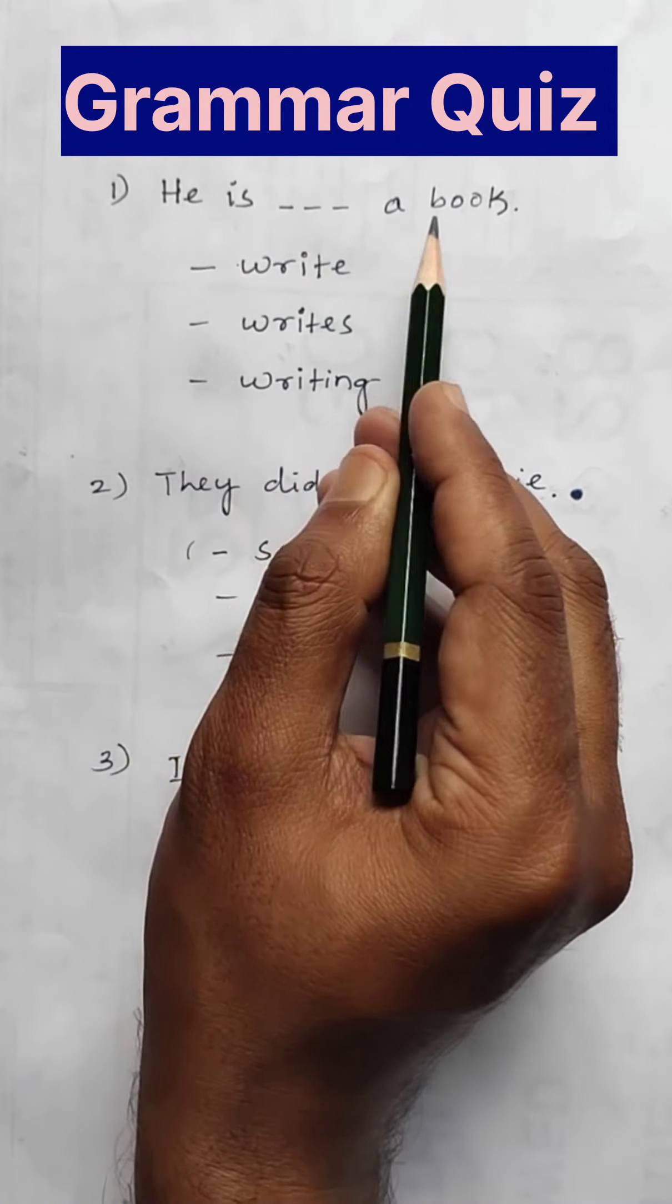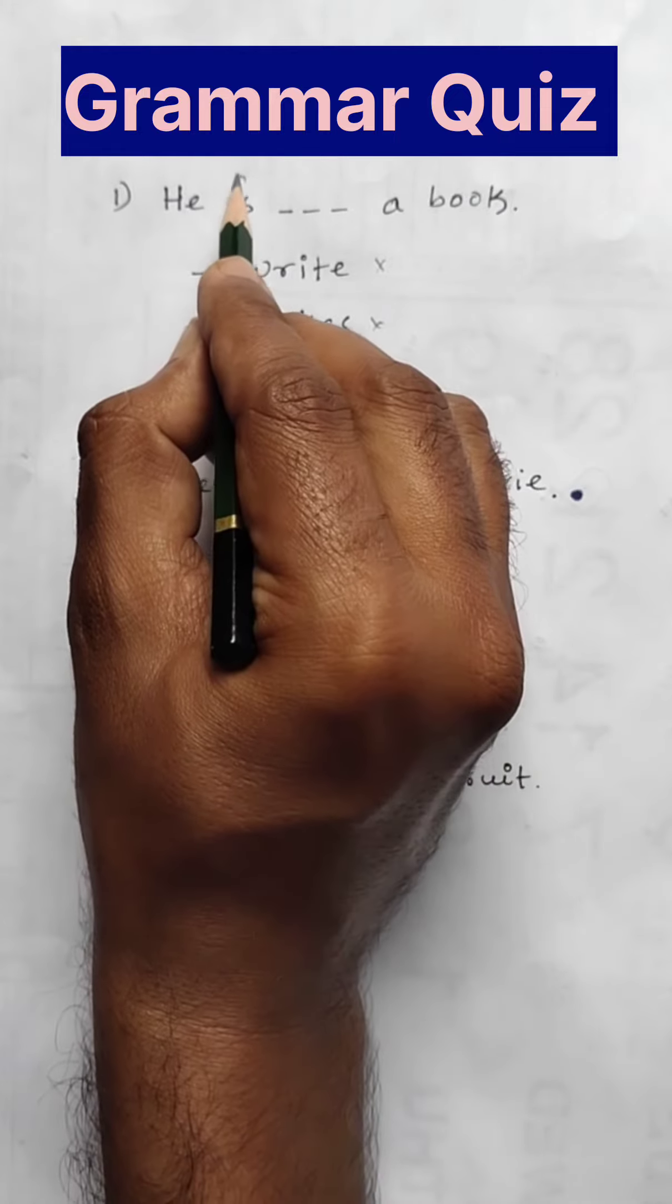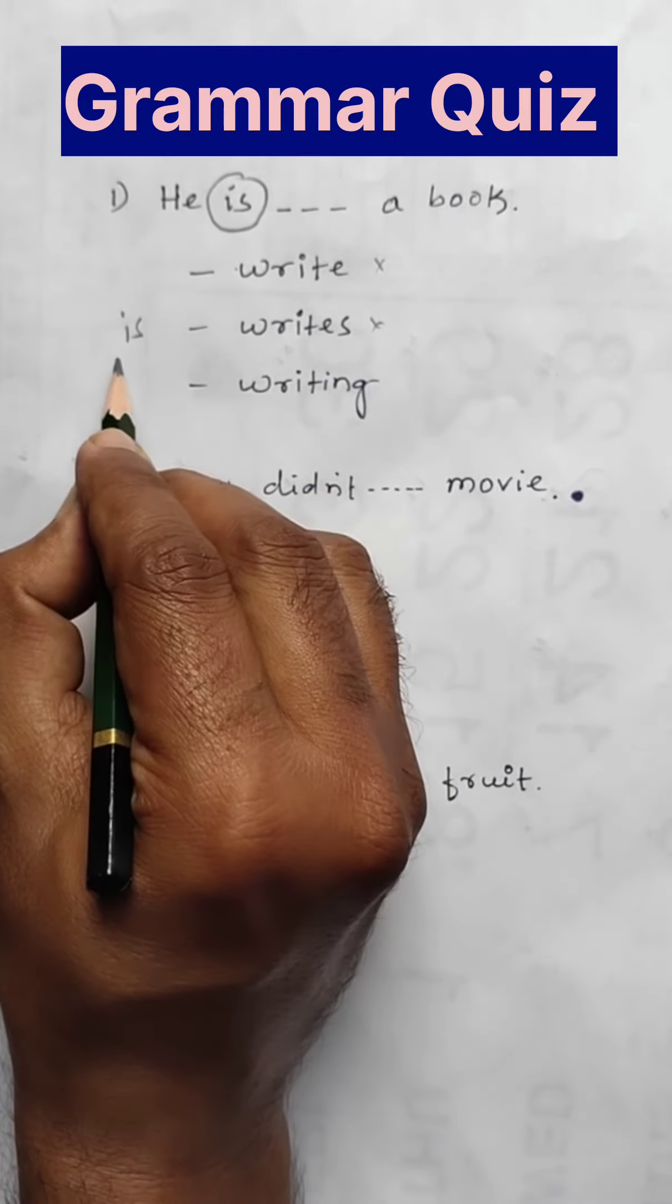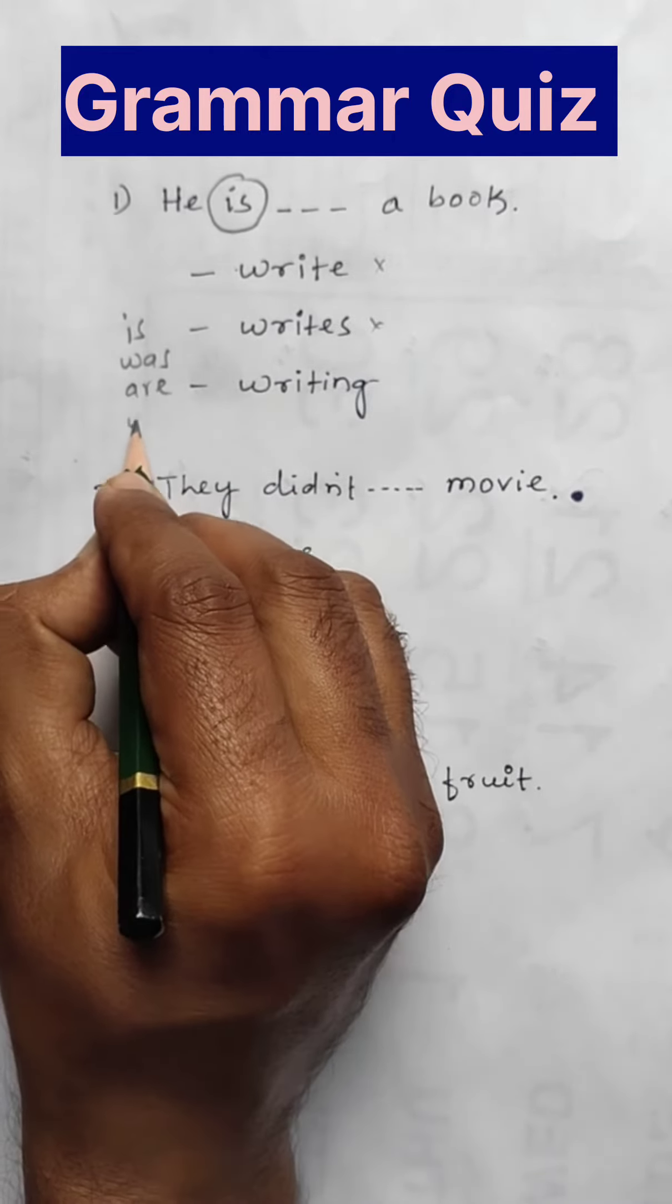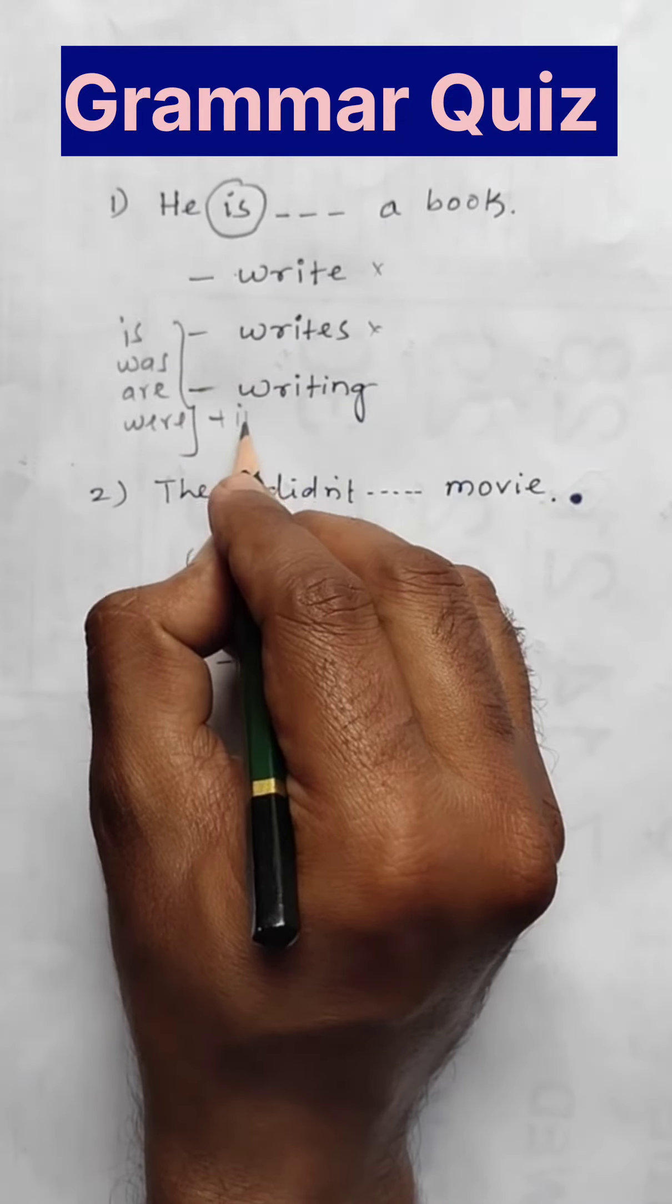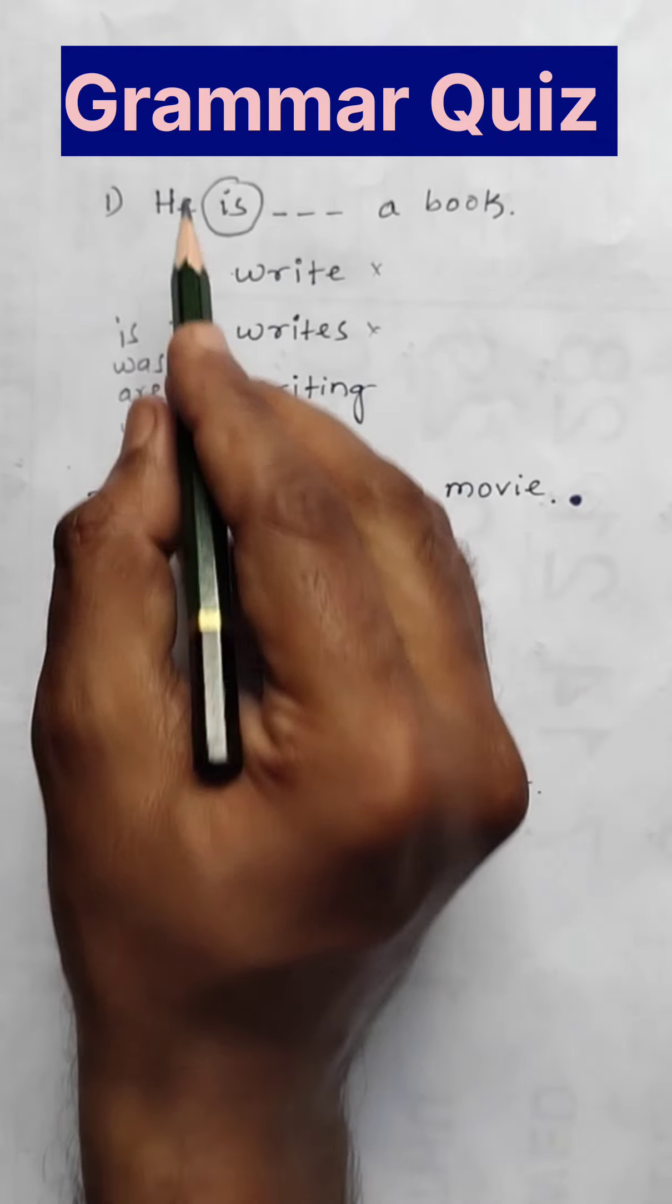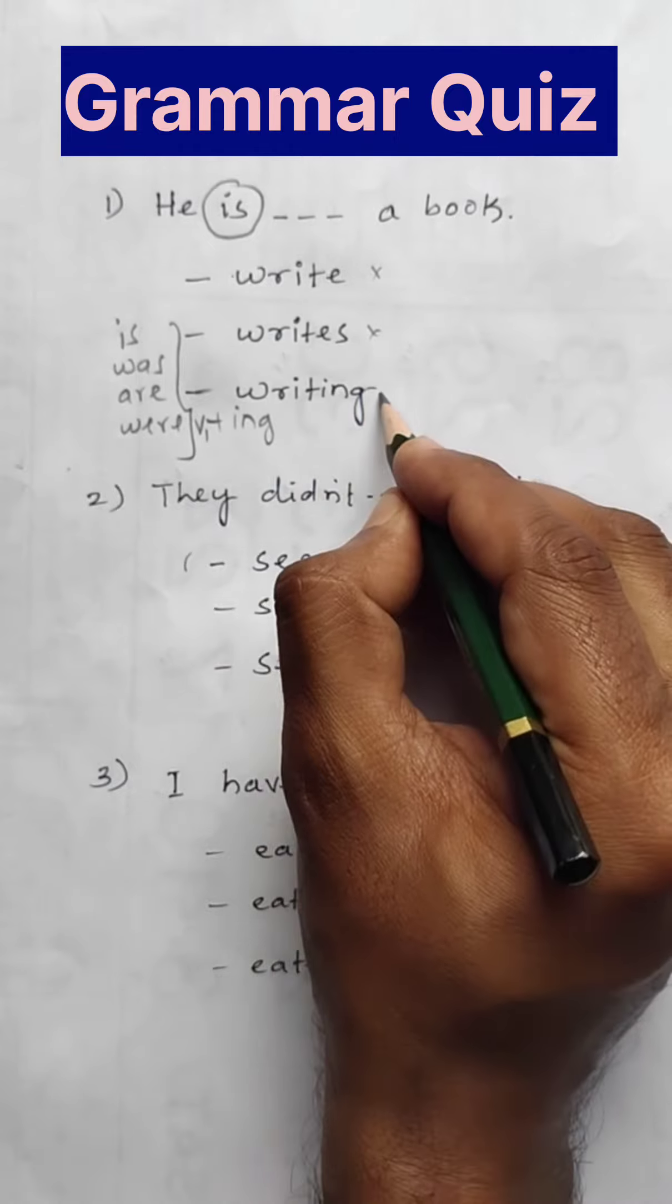First one. He is blank a book. Write? No. Writes? No. Whenever 'is' is there, it may be is, was, are, or were. That time what will come? -ing. Were plus -ing. He is writing, he was writing, like that. So the answer is writing.